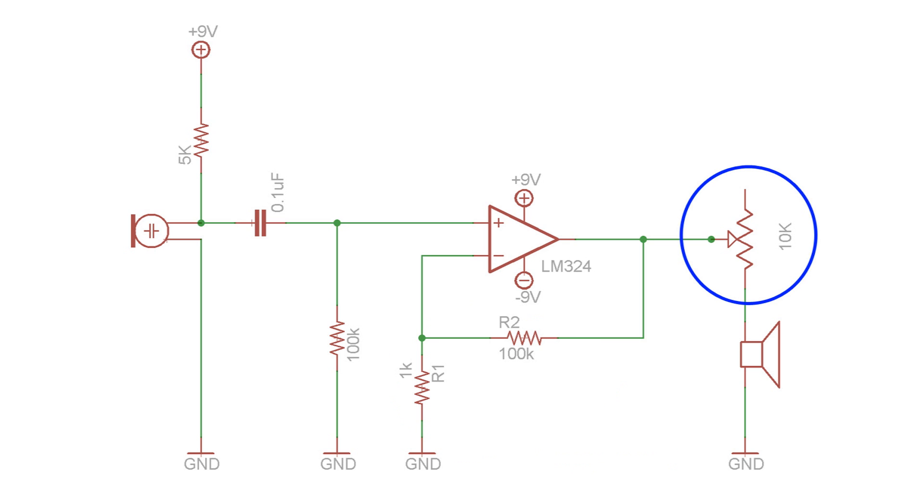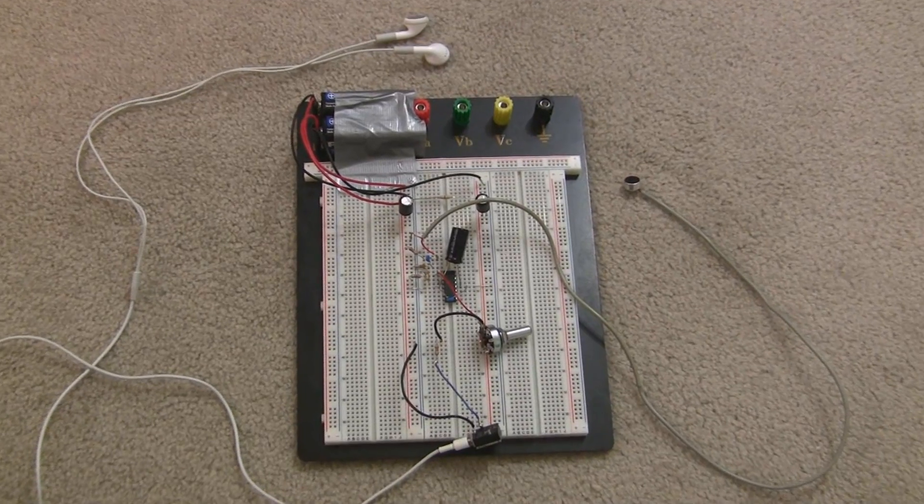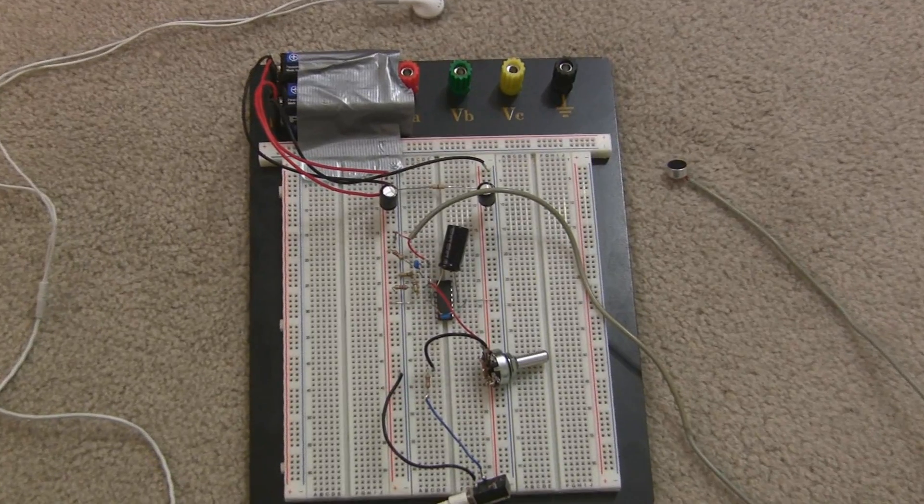Finally, I added a variable resistor to the output to give me some control over the volume. Hey, wake up! We are almost done! Alright, here's what it looks like built on a breadboard, and guess what? It works!